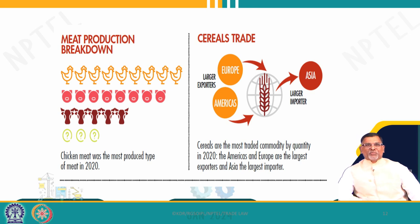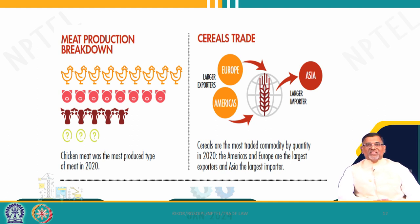In terms of production, the FAO says that chicken is the largest meat produced in 2020. In trade, cereals are the important export product from the Americas and Europe, and the largest importer is Asia. Cereals are the most traded commodity — the largest exporters are Europe and America and the largest importers are Asia. This means Asia is becoming an agriculture market, and most of them are developing countries, while the exporters are America and Europe.